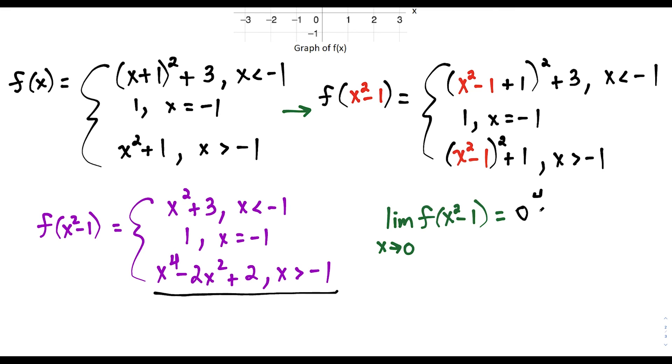So I would find this limit by plugging in 0 to this expression here, and I would have 0 to the 4th minus, let's just make this a little neater, we have minus 2 times 0 squared plus 2, and this would simplify to 2, which would also give us choice C.